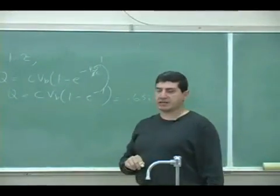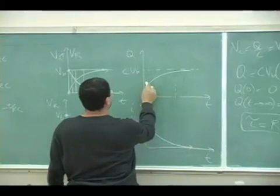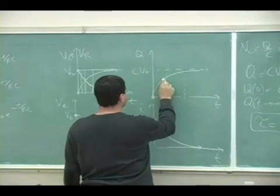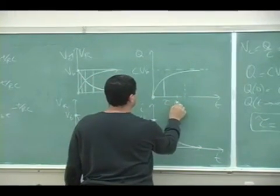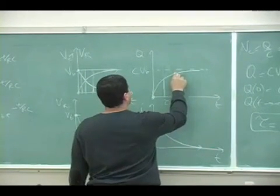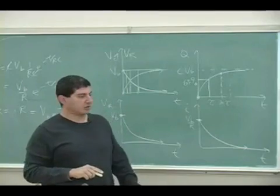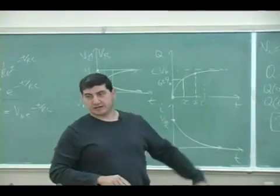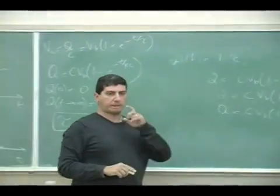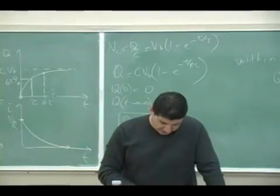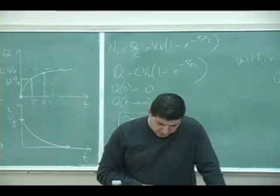So that means within one time constant, when T equals RC — 63% is about here on the graph. So visually, this is one time constant right here. Within two time constants, what should it reach? This is 63% here. Within two time constants, you do CVB times 1 minus e to the minus 2, which gives you about 86.5%.